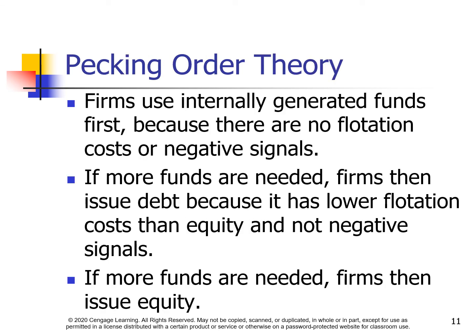Pecking order theory. Firms use internally generated funds first, because there are no flotation costs and no negative signals. If more funds are needed, companies then issue debt, because it has lower flotation costs than equity and sends no negative signals. If more funds are needed, firms then issue equity.